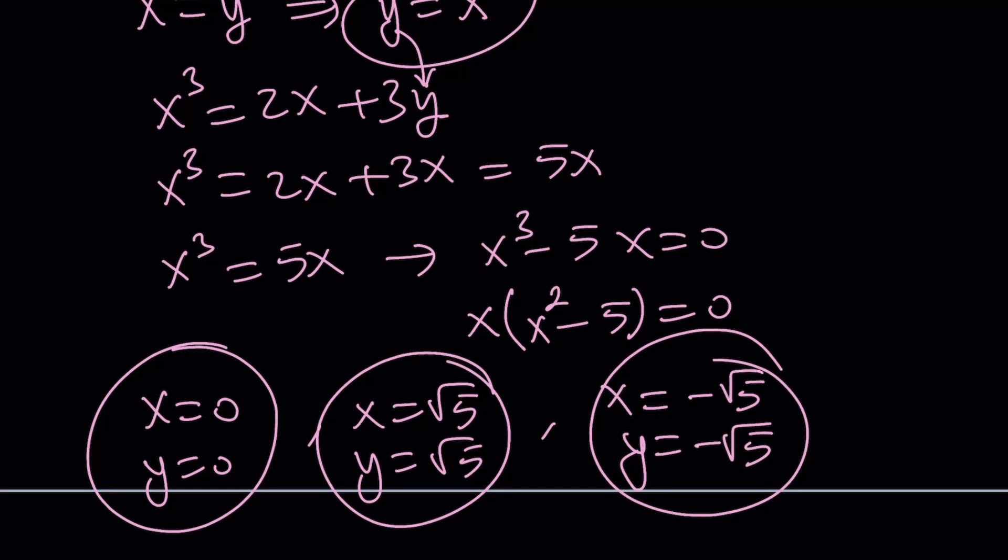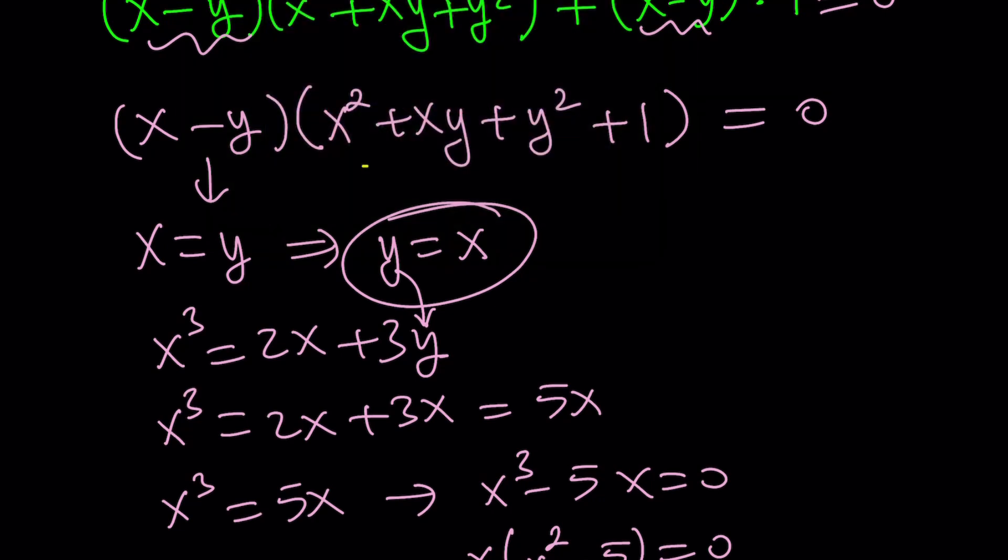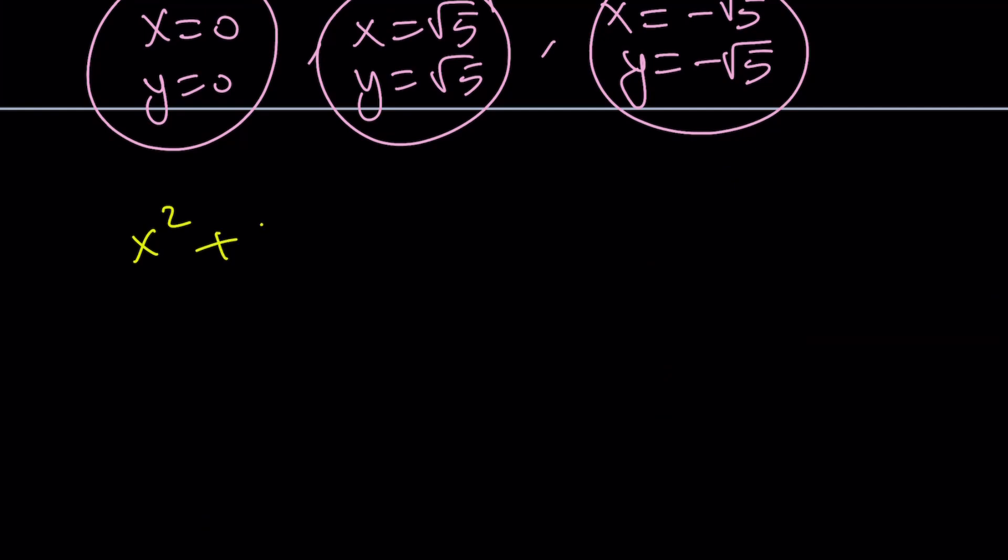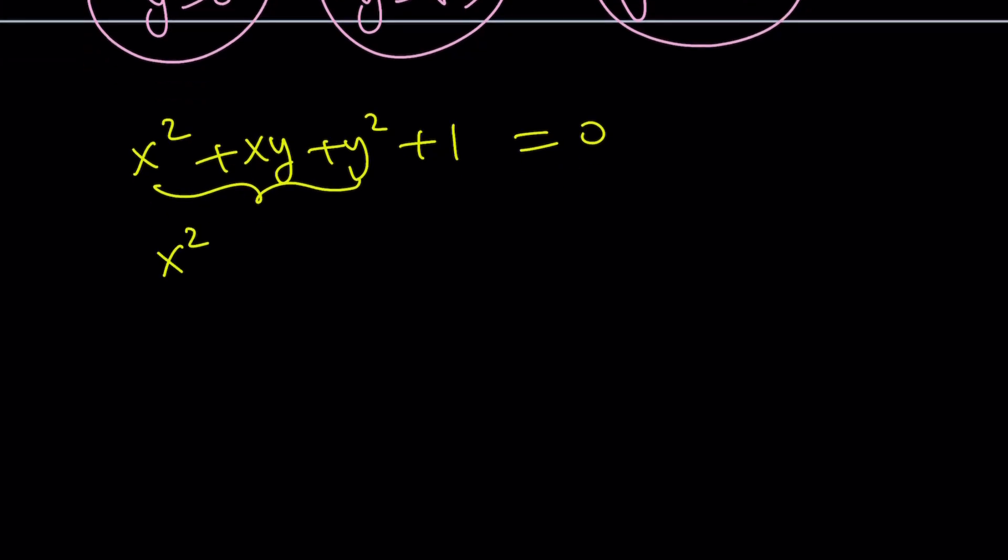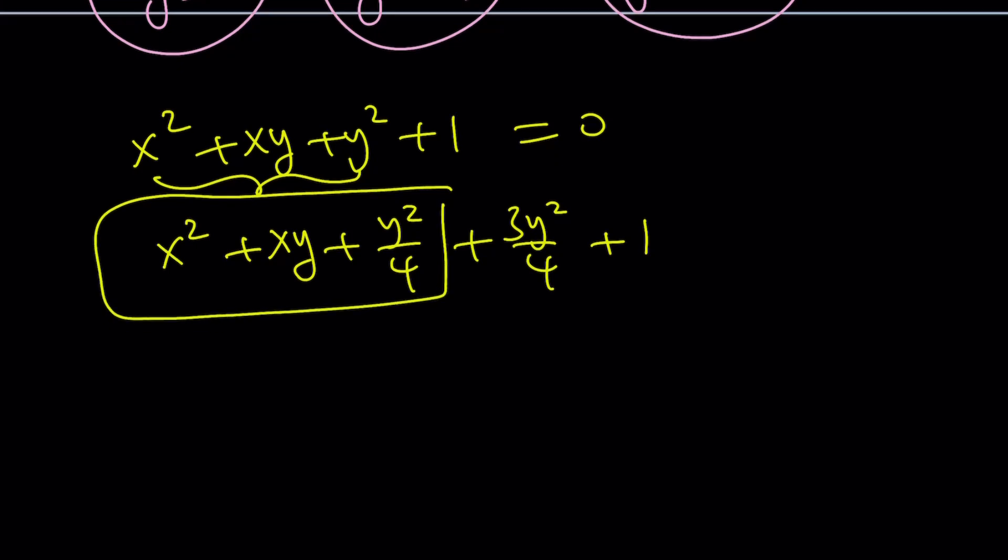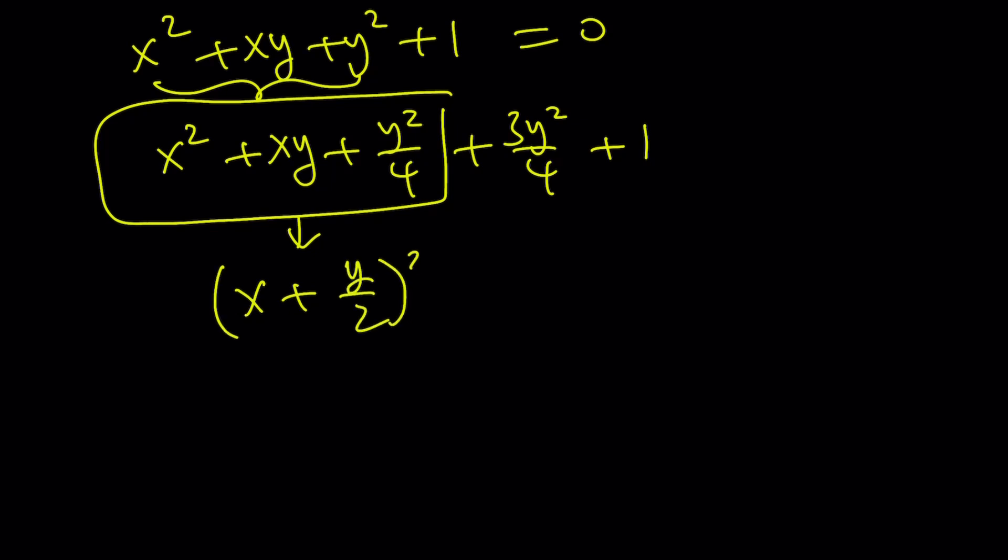So that would be our first method. But let's take a look at the other factor. Let's set it equal to 0: x² + xy + y² + 1 = 0. If you dealt with quadratics or general polynomials, you should be familiar with this. You can complete the square and write it as x² + xy + y²/4 + 3y²/4 + 1. This becomes a perfect square: (x + y/2)². This can't be negative, this can't be negative, and you're adding 1, so the total thing has to be greater than 0, which means it cannot equal 0. So the second solution does not give us anything real. But if you wanted to go with complex solutions, you could definitely get something out of that. I'm going to show you how complex solutions come up in the second method.